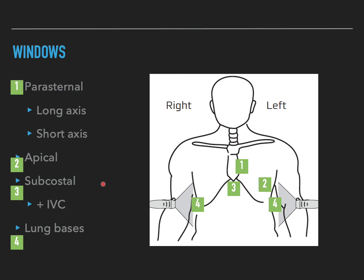Let's understand the windows available to scan the heart. We are going to use a phased array probe, which has a low frequency. We do not use the curvilinear probe because it has a large footprint, and the larger the footprint, the more ribs it will intersect, causing lots of acoustic shadowing.